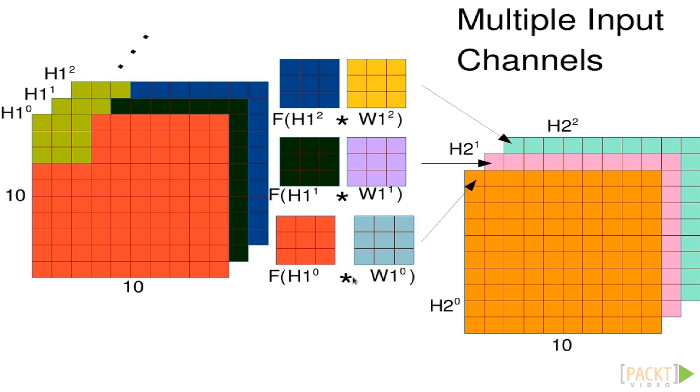Of course, you can combine all these approaches, and this is typically done. Especially after your first convolutional layer, when you've computed, say, 32 features on the window, now you have many input channels for the next layer.